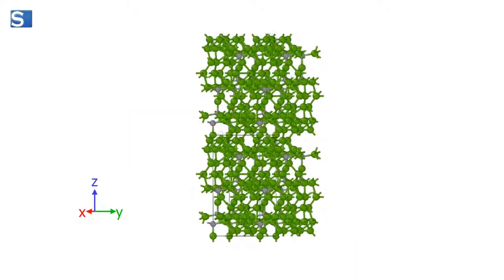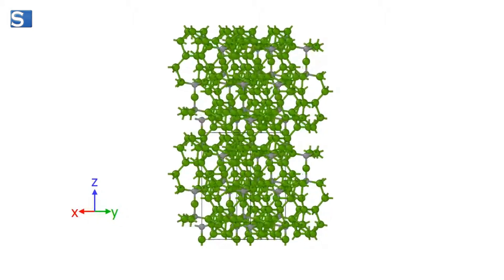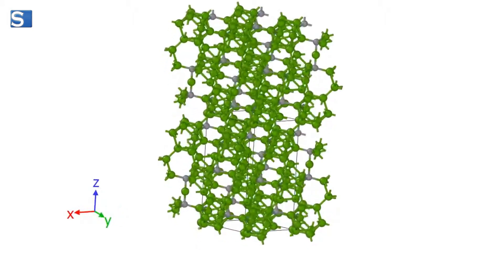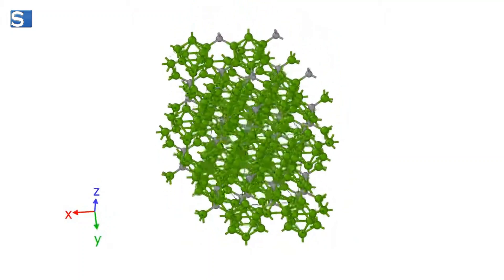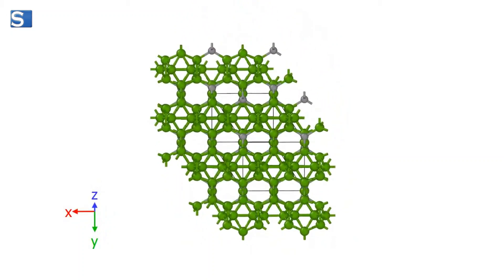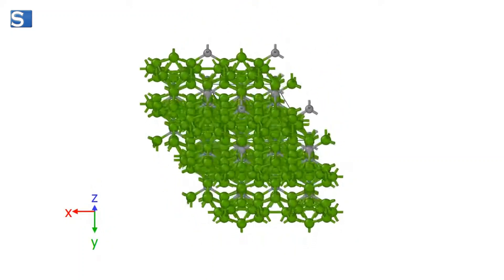Boron carbide is a covalent material characterized by an intricate structure of boron and carbon atoms. This results in its extraordinary hardness, making it one of the hardest materials known to man.